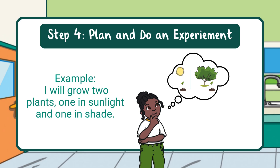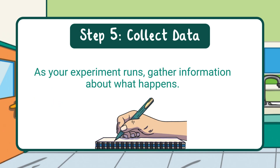Step five: collect data. As your experiment runs, gather information about what happens. This could be measurements, notes, or even pictures. For example, I measured the plants' heights every day. Collecting data shows what really happened.